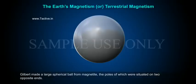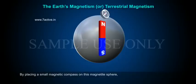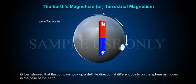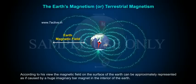Gilbert made a large spherical ball from magnetite, the poles of which were situated on two opposite ends. By placing a small magnetic compass on this magnetite sphere, Gilbert showed that the compass took up a definite direction at different points on the sphere, as it does in the case of the Earth.